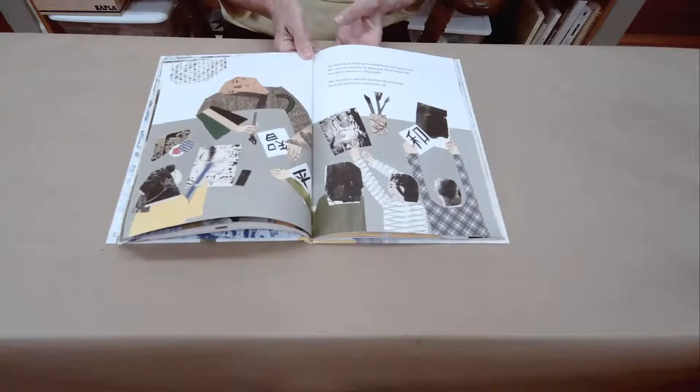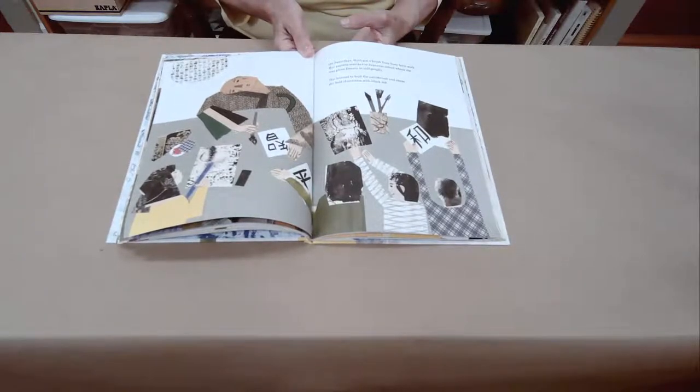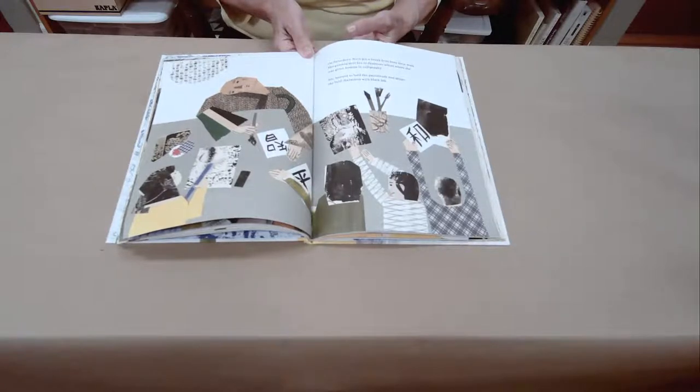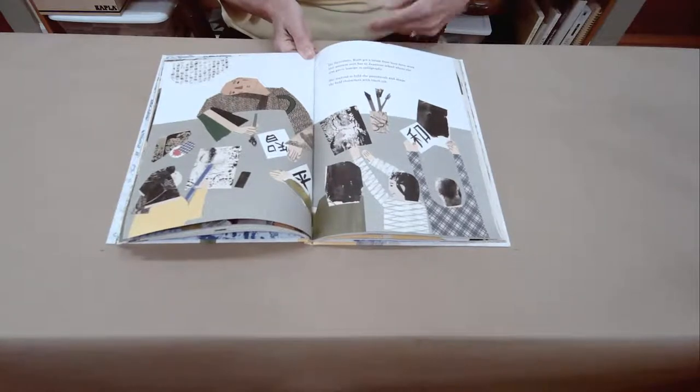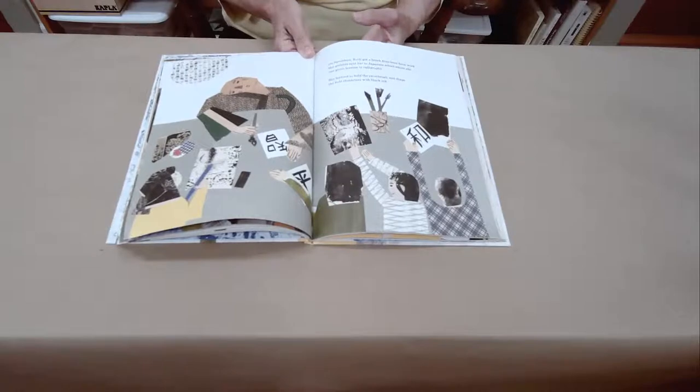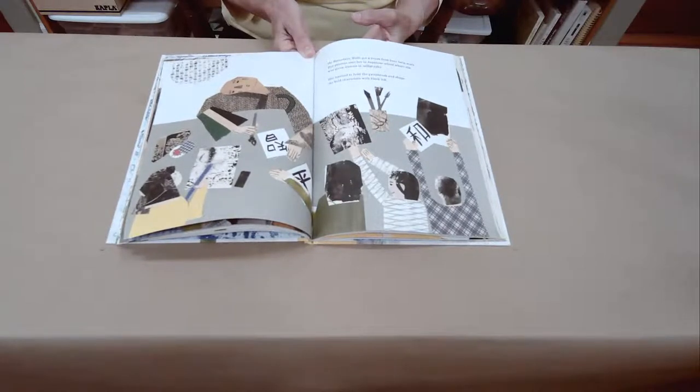On Saturdays, Ruth got a break from busy farm work. Her parents sent her to Japanese school where she was given lessons in calligraphy. Do you know what calligraphy is? Yes, it's a way of writing, like you see here, using characters. She learned to hold the paintbrush and shape the bold characters with black ink.